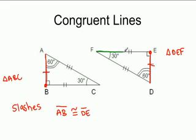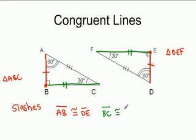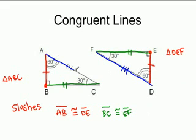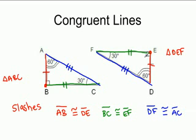Line EF has two slash marks, and line BC also has two slash marks, so line BC is congruent to line EF. Our last side, DF, has three slash marks, and line AC has three slash marks, so line DF is congruent to line AC. You just need to look for the same number of slash marks on each figure.